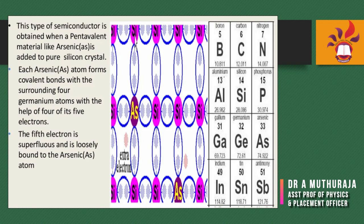Semiconductor material normally comes in two different types — one is n-type and another one is p-type. Here I am showing the periodic table and energy band diagram. The n-type semiconductor is obtained when a pentavalent material like arsenic is added to a pure silicon structure. Each arsenic atom forms covalent bonds with the surrounding four silicon atoms using four of its five electrons.